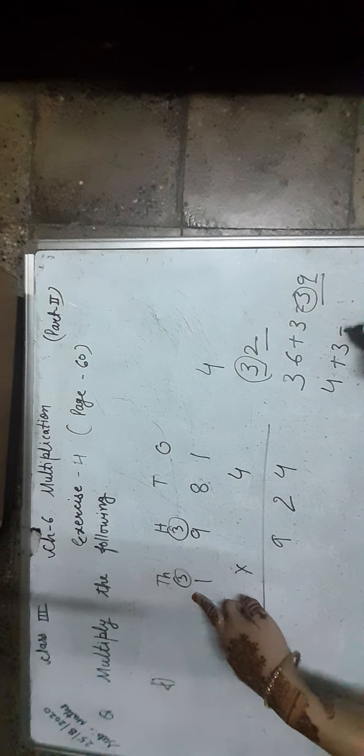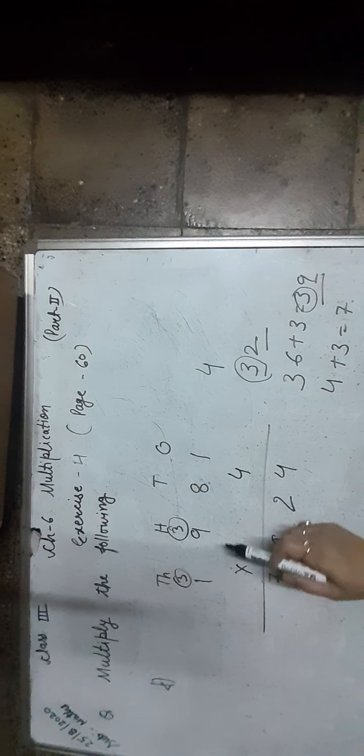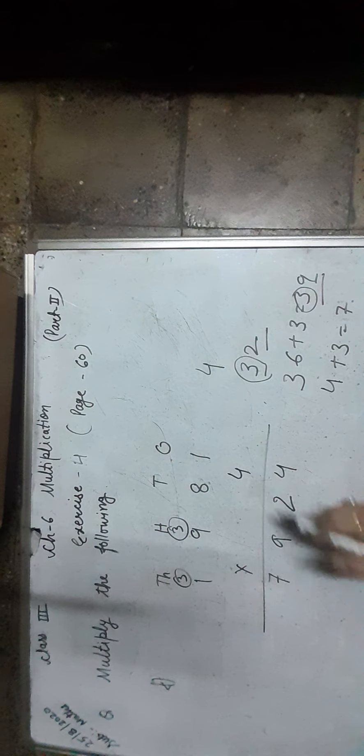Now, 1 × 4 is equal to 4, plus 3 carry over, equals 7,000. So we write 7 in the 1,000s place. The product of 1,981 and 4 is 7,924.